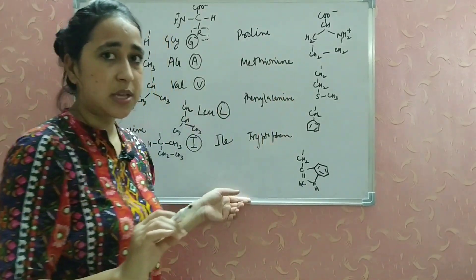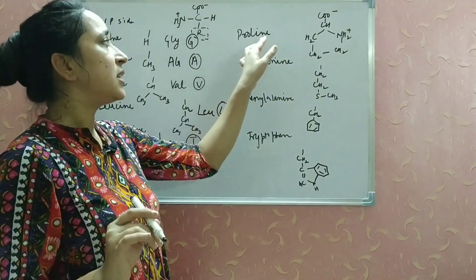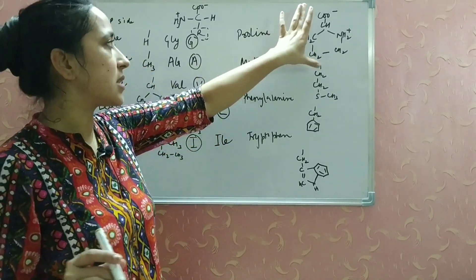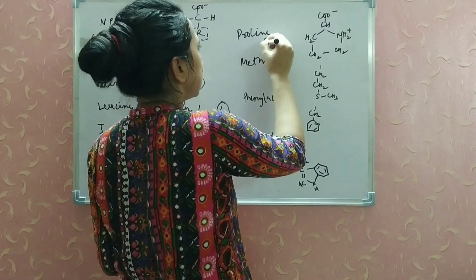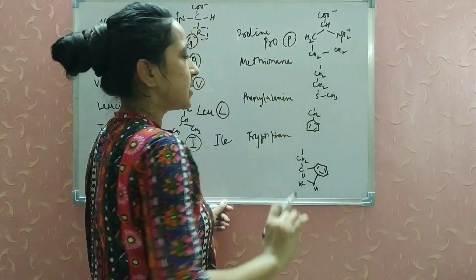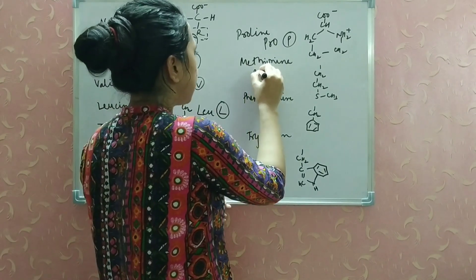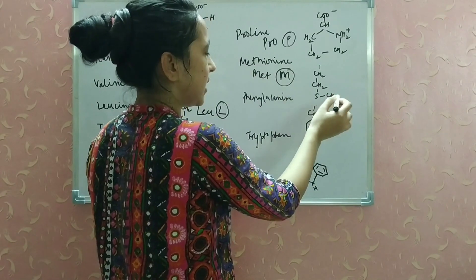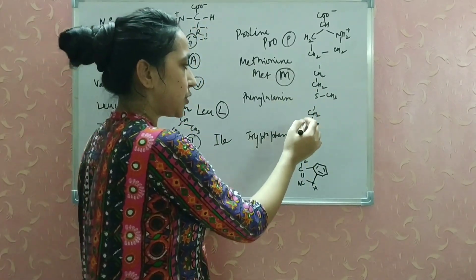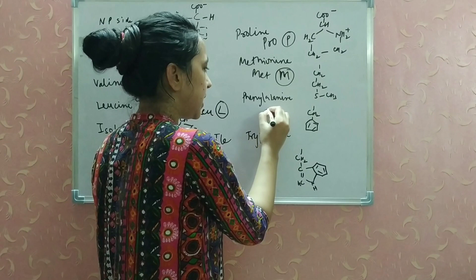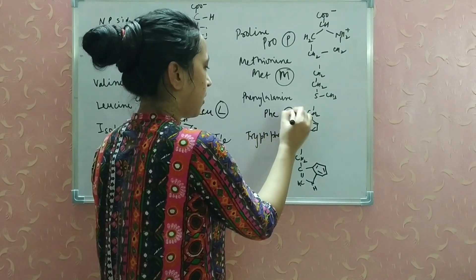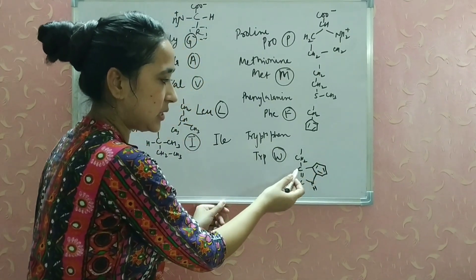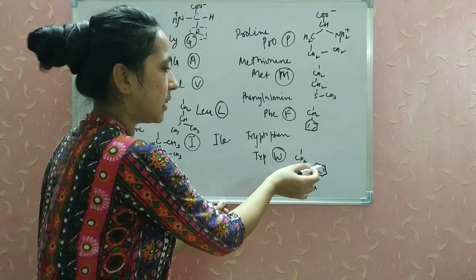Proline is an exceptional amino acid because it contains an imino group rather than an amino group. The overall structure of proline forms a ring — this is the total structure of proline, not just the R group. It is represented by Pro and P. Methionine (Met, M) has the R group CH2-CH2-S-CH3. Phenylalanine (Phe, F) has R group CH2 attached to a benzene ring. Tryptophan (Trp, W) has R group CH2-C with a double bond CH-NH attached to a benzene ring.